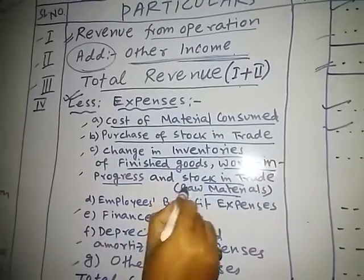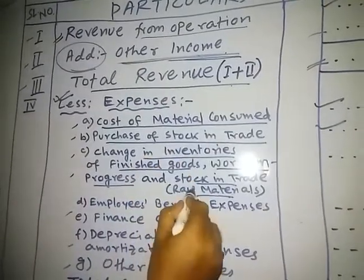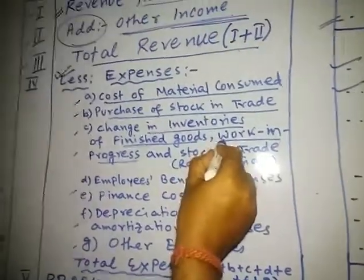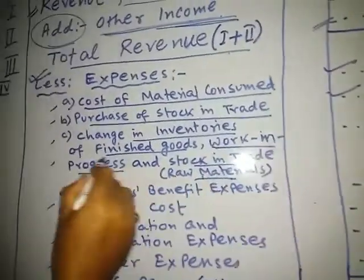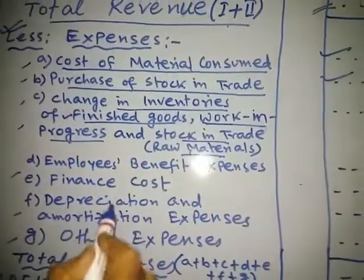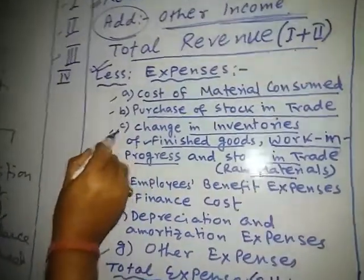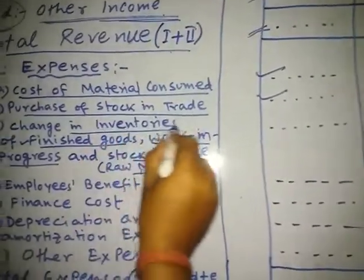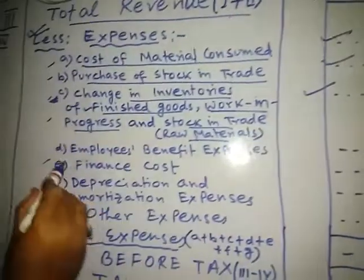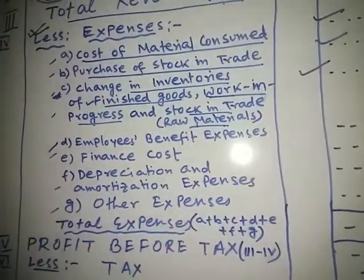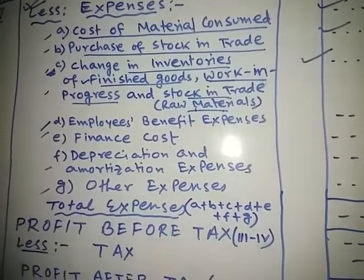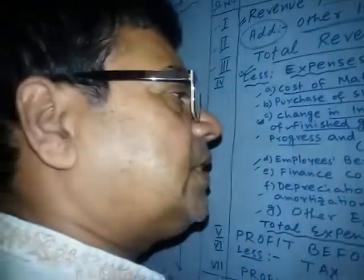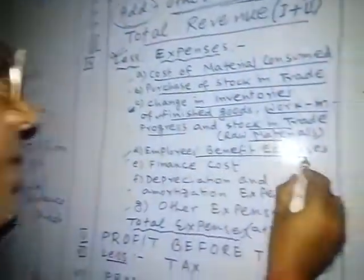Change in inventory covers opening and closing stock of raw materials, opening and closing work in progress, and opening and closing finished goods. Change in inventory is also an expense. Then, employees' benefit expense is the next item.